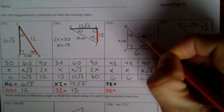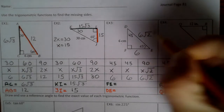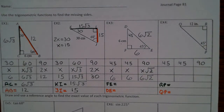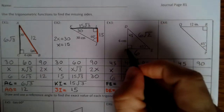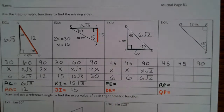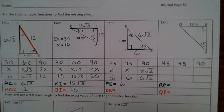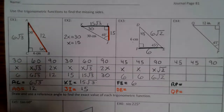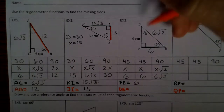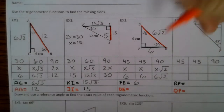So to find FE, we now know FE is 6. Note to self: do not punch camera during video. DE is 6 square root of 2.